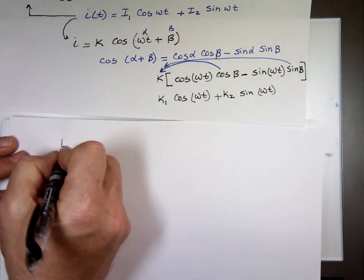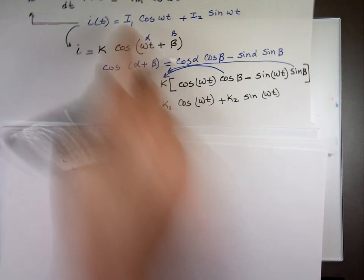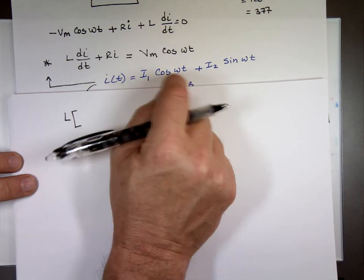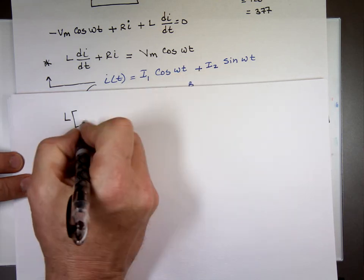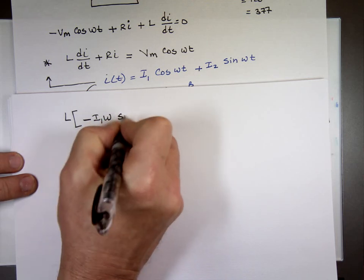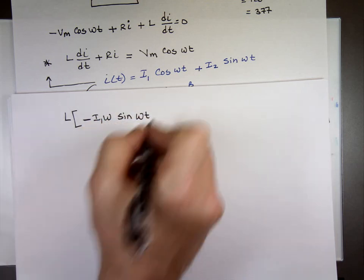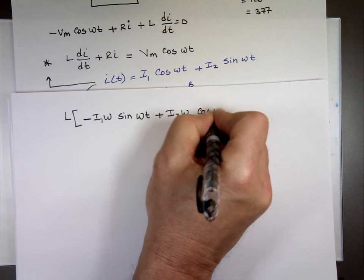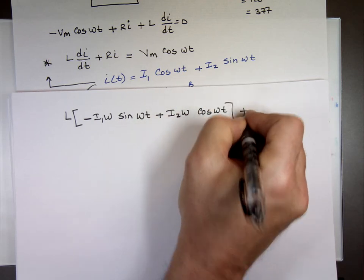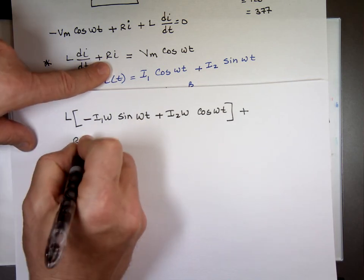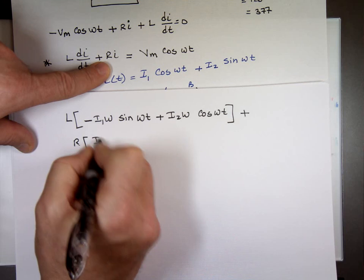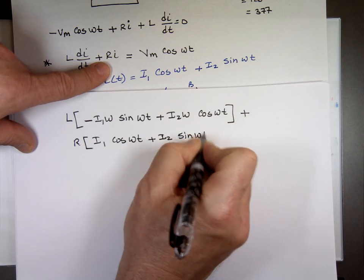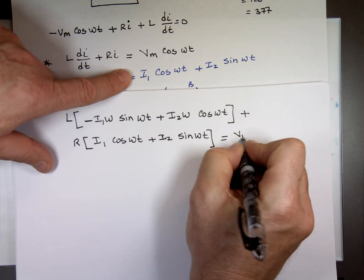So L times—what's the derivative of this current? Let's go through the math. Remember your calculus. What's the derivative? I1 is a constant, cosine ωt, derivative of cosine is negative sine, right? That's negative I1·ω·sin ωt plus what's the derivative of sine? Cosine. I2·ω·cos ωt plus R times I, R is this one times I which is what? I1·cos ωt plus I2·sin ωt.